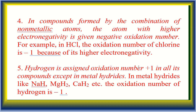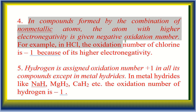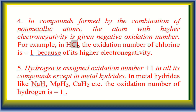For example, in HCl, the higher electronegative element is chlorine, so chlorine is negative and hydrogen is electropositive. The oxidation number of chlorine is −1 because of its higher electronegativity.